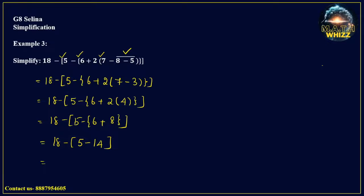Now we have minus 14 and plus 5. Subtracting, we get 9. 14 is big, so the sign of that is minus 9.